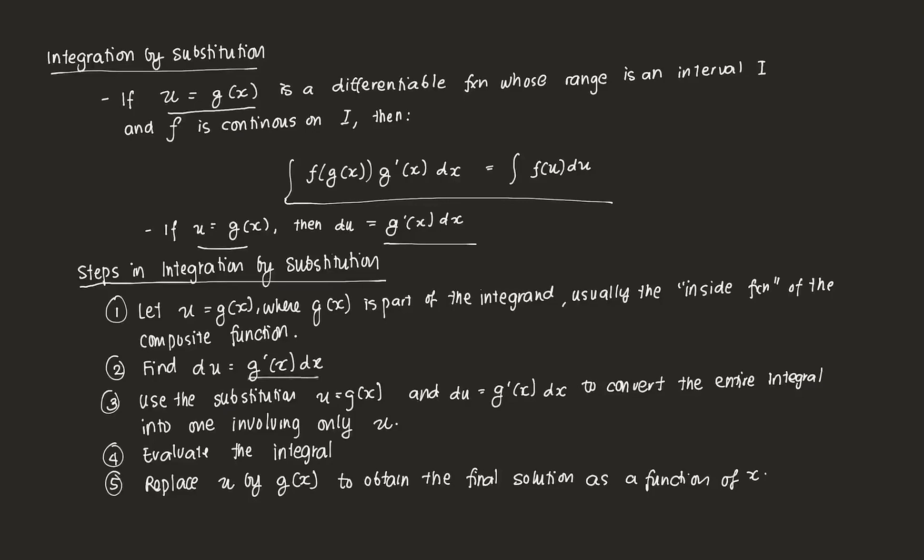Next, we use the substitution u = g(x) and du = g'(x) dx to convert the entire integral, which was complicated before, into one that just involves u. We're going to evaluate the integral with respect to u. Once we evaluate the integral with respect to u, we plug everything back as a solution to get the final solution as a function of x, which is our main variable of concern.